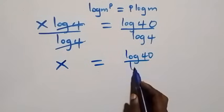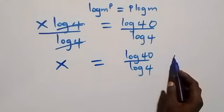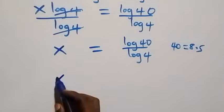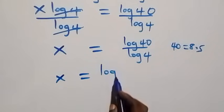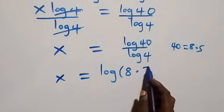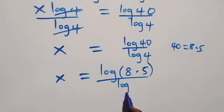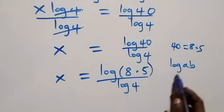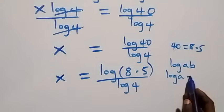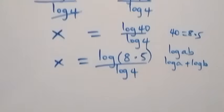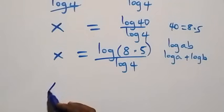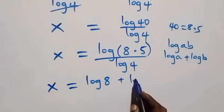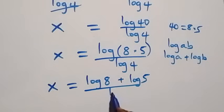Over log four. Here we can express 40 as 8 times 5, so what we have becomes x equals to log of 8 times 5 over log four. This follows the log product rule: log of A times B can be written as log A plus log B. So this becomes x equals to log 8 plus log 5 over log four.